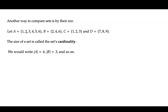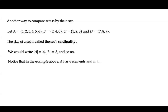What is the size of B? It has 3 distinct elements. C also has 3 distinct elements, and D also has 3 distinct elements. Note that in this example, A has 6 elements, and B, C, and D all have 3 members.